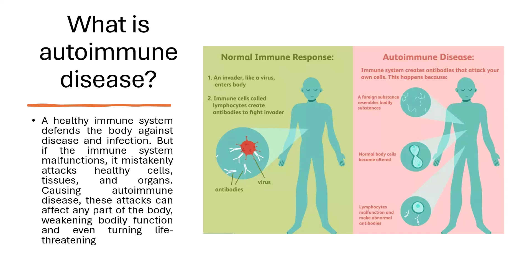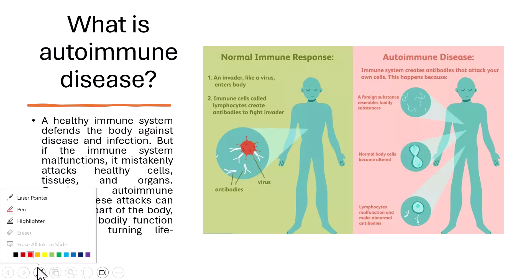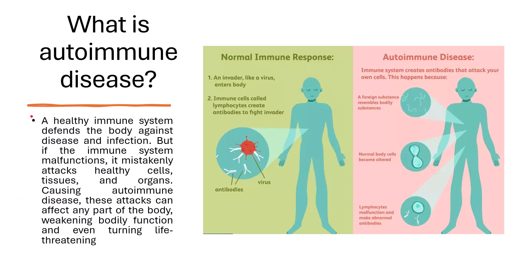An example of autoimmune disease is lupus. A healthy immune system defends the body against disease and infection, but if the immune system malfunctions or is disturbed, it mistakenly attacks healthy cells, tissues, and organs of our body, causing autoimmune diseases. These attacks can affect any part of our body, weakening bodily functions and even turning life-threatening.